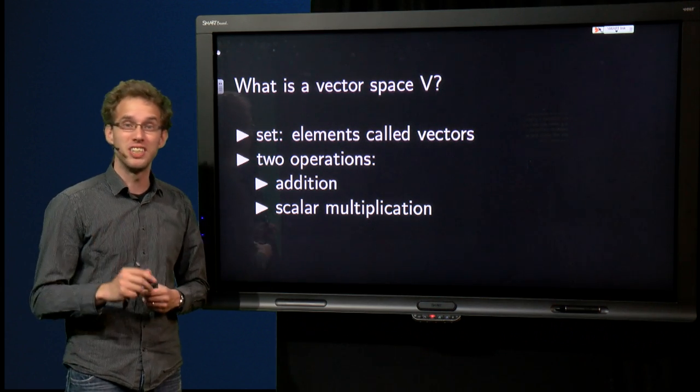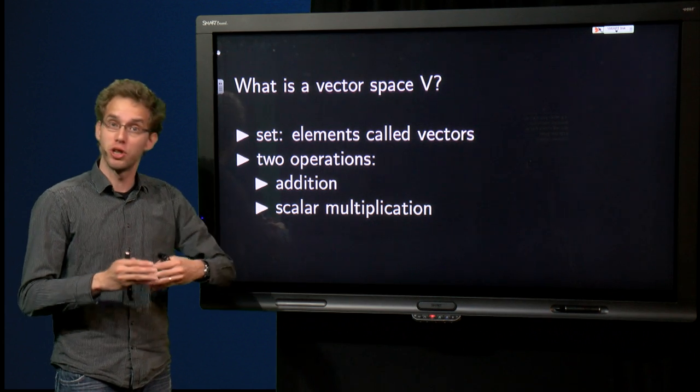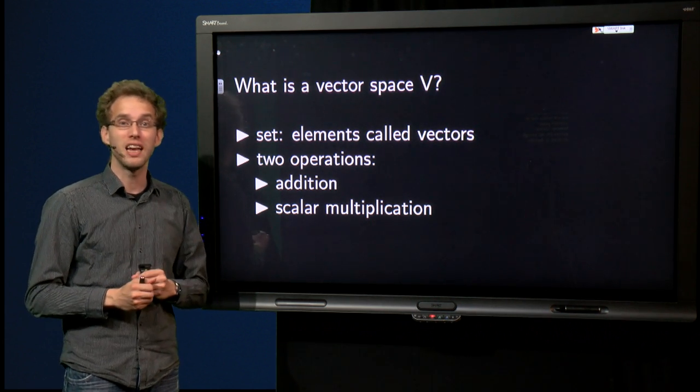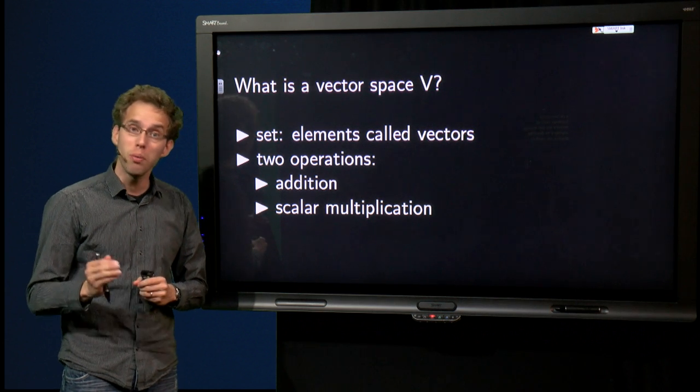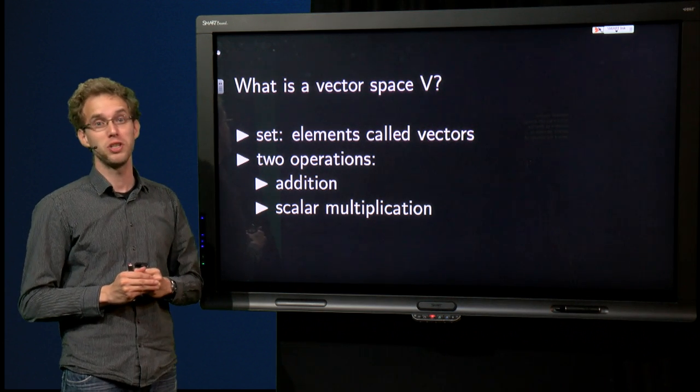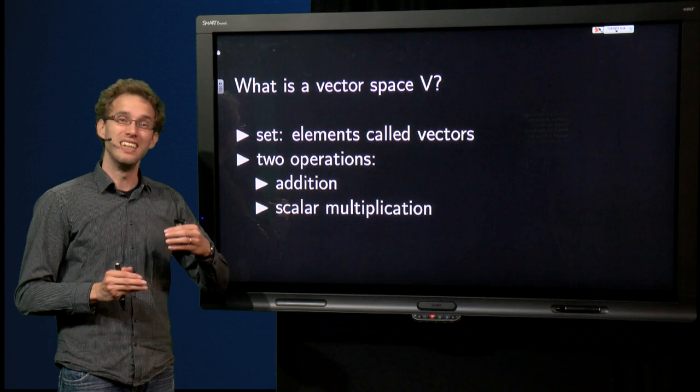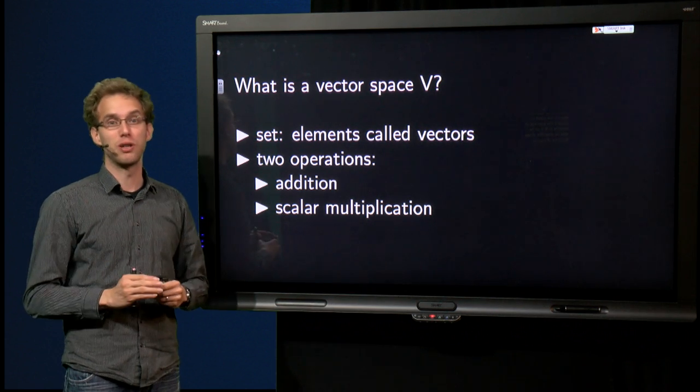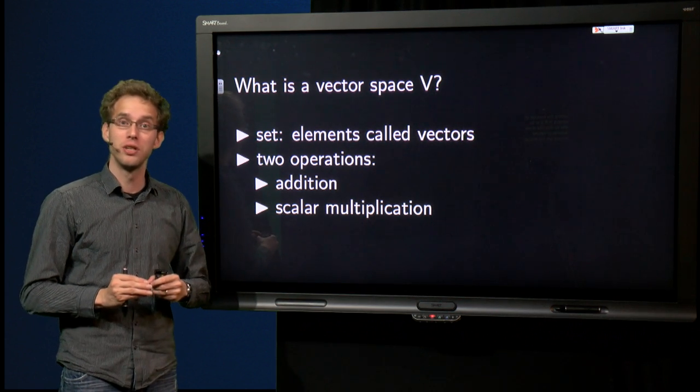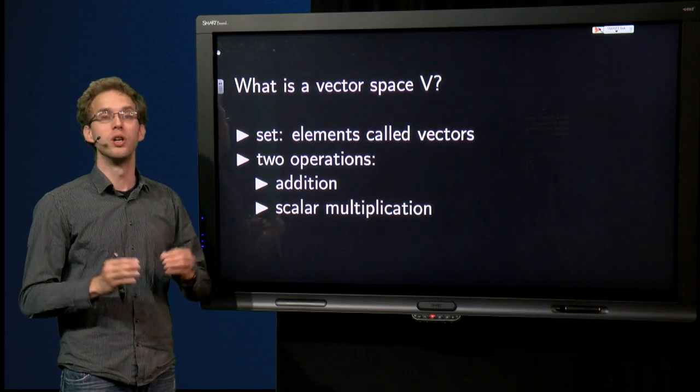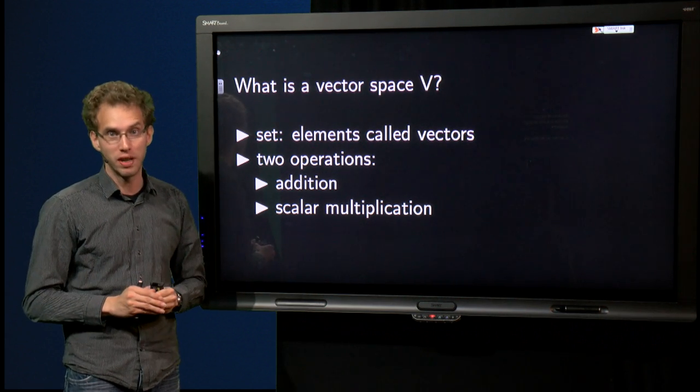As you continue in physics, for example when you start on quantum mechanics, you will notice that at a certain point normal vectors are not enough anymore to describe physics. We need to extend the concept of vectors in Rn to be able to describe those features of nature that normal vectors cannot capture.